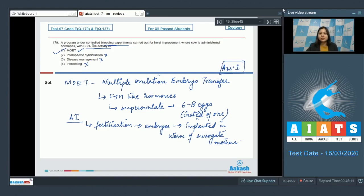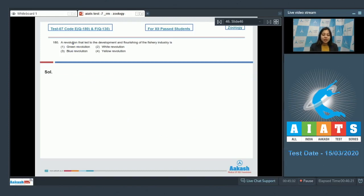Proceeding to the next question—180: A revolution that led to the development and flourishing of fishery industry is... So the revolution that led to development of fishery industry is blue revolution. Let us see the other options.